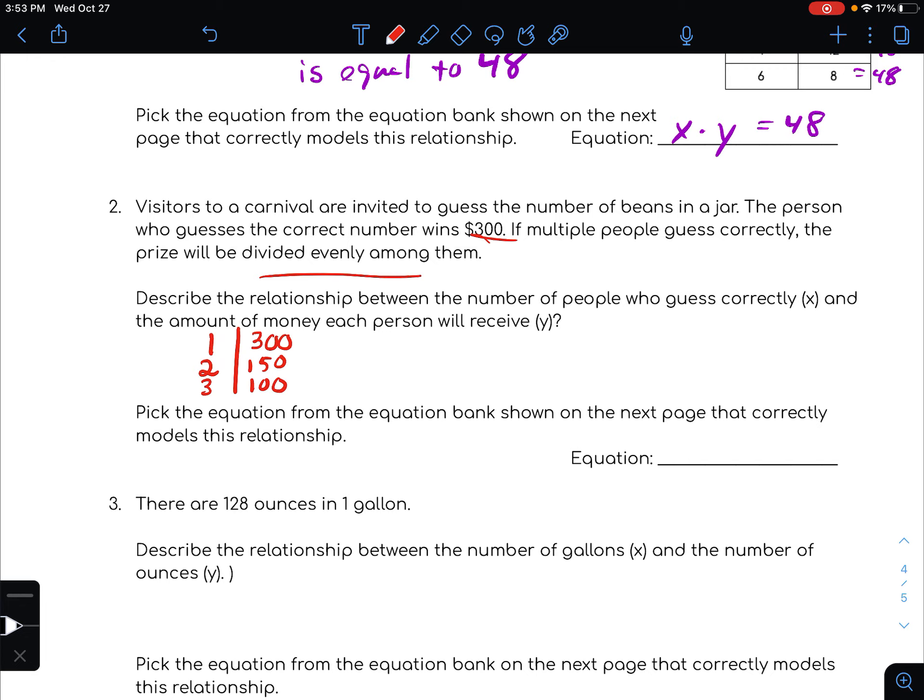So essentially we're taking the $300 and dividing it by the amount of people, which would be x, or dividing it by x, and then that will give us our y value. So 300 divided by one is 300, 300 divided by two is 150, 300 divided by three is 100.